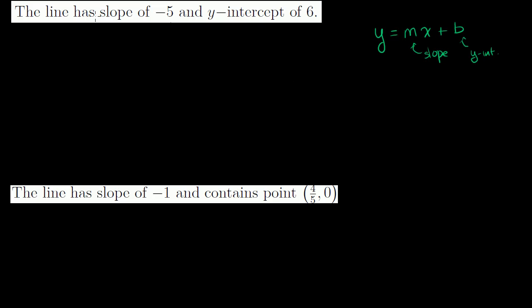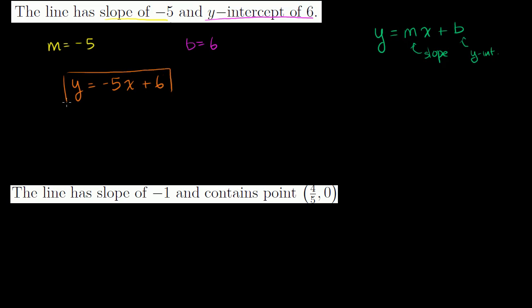Here they tell us that a line has a slope of negative 5, so m = -5, and it has a y-intercept of 6, so b = 6. This is pretty straightforward. The equation of this line is y = -5x + 6.